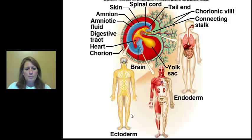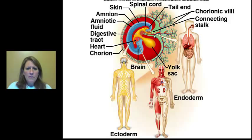Here is the whole image. Here is the placenta, and these are the chorionic villi, which help develop into the placenta. This will become the umbilical cord, and each of these layers will develop into the embryo. We have something called a yolk sac, which is used for nourishment by the embryo until the umbilical cord is established and functioning.